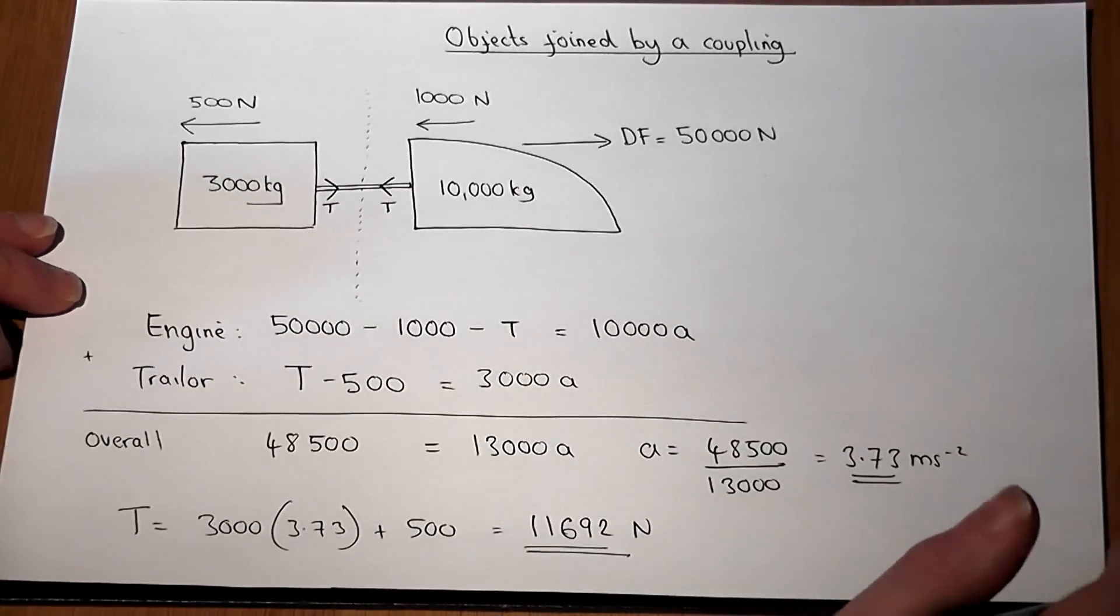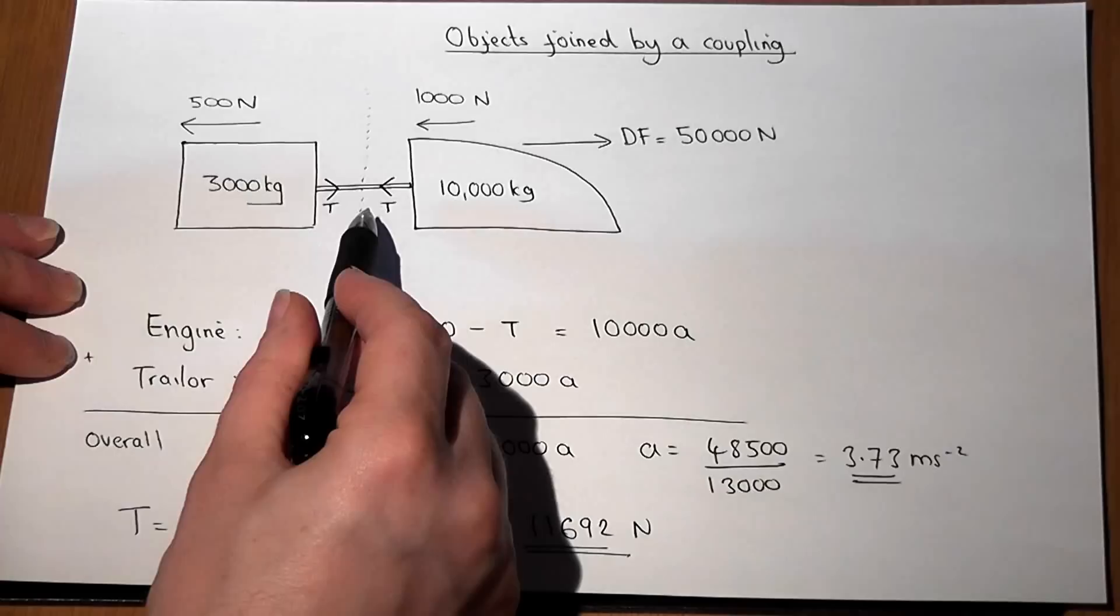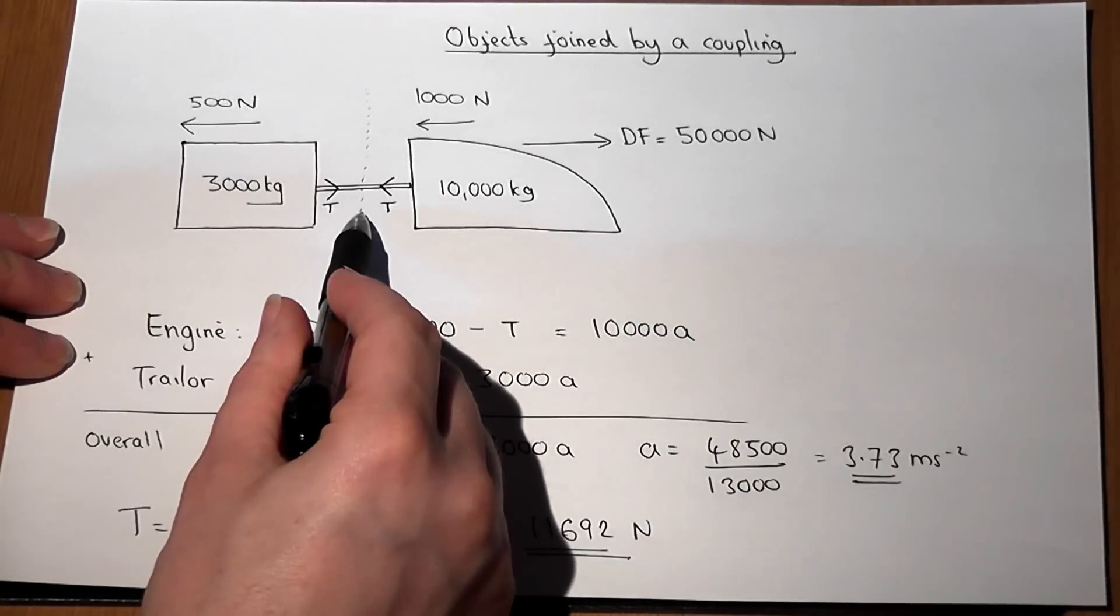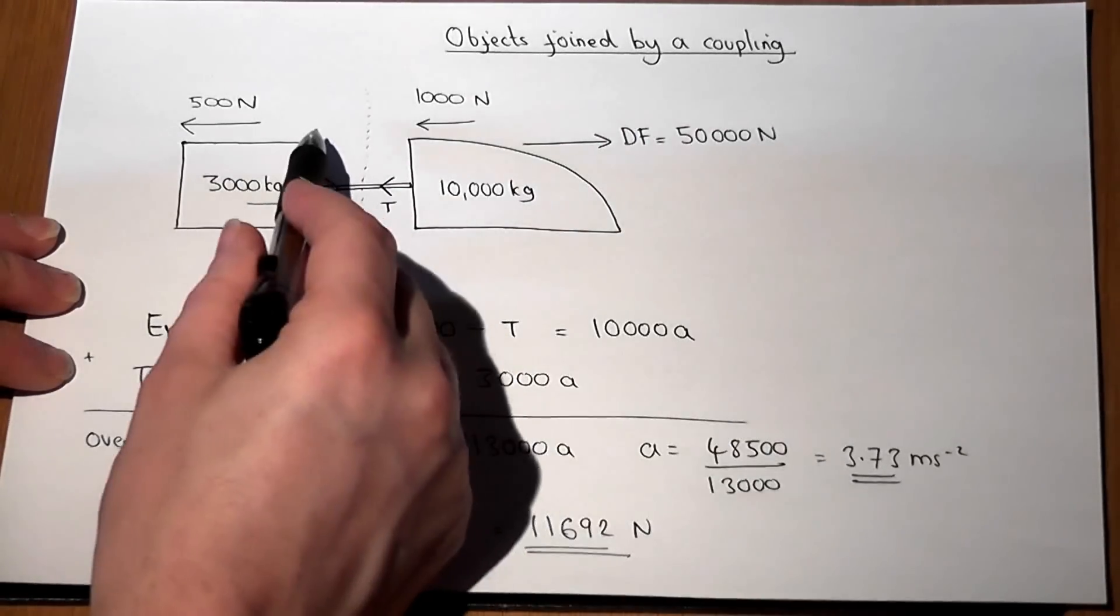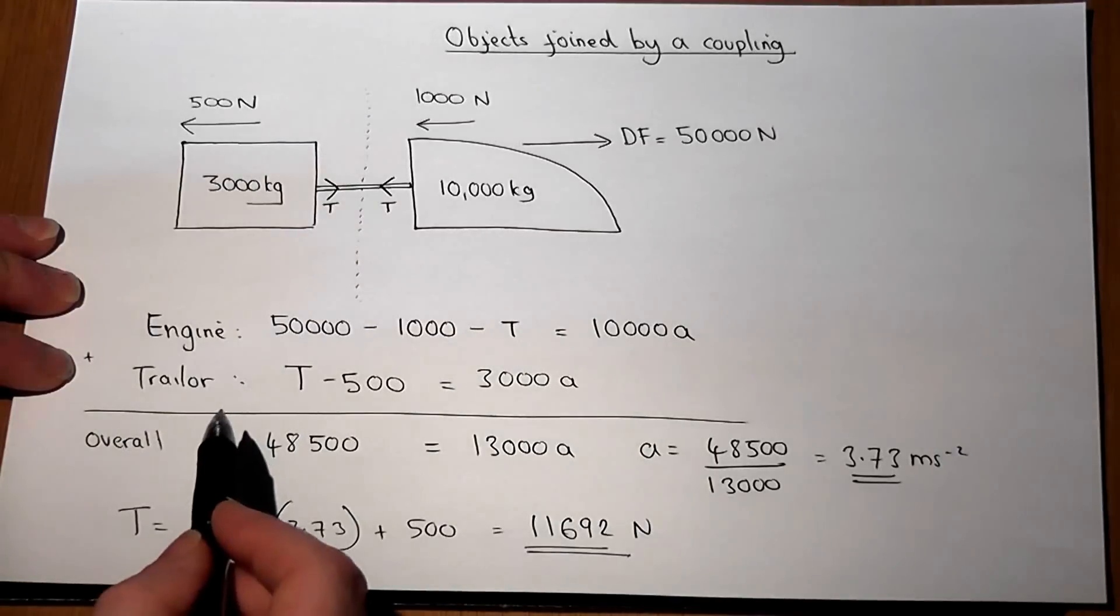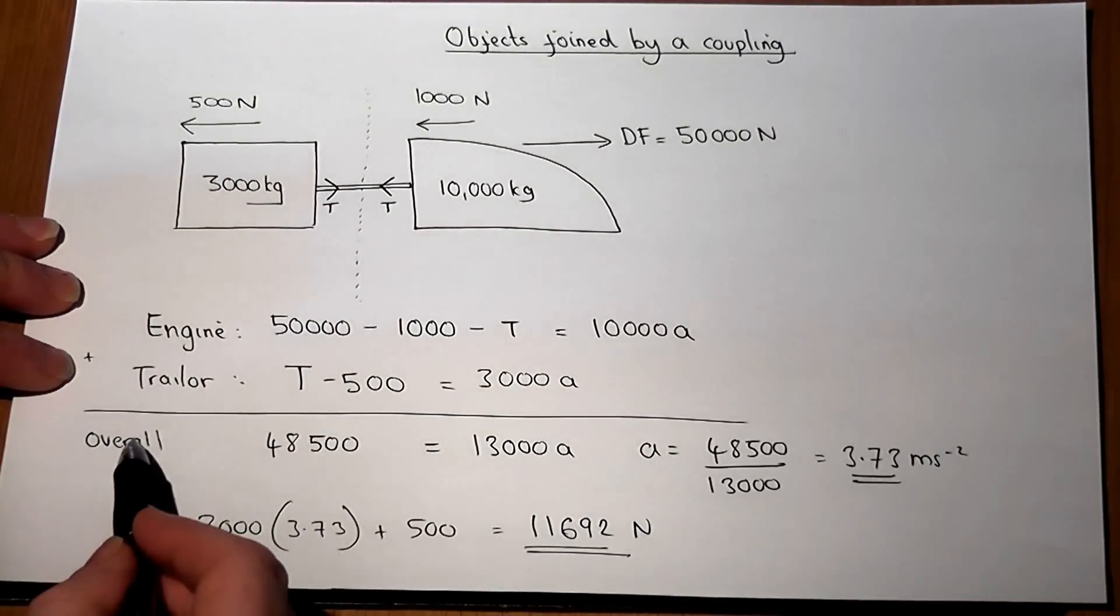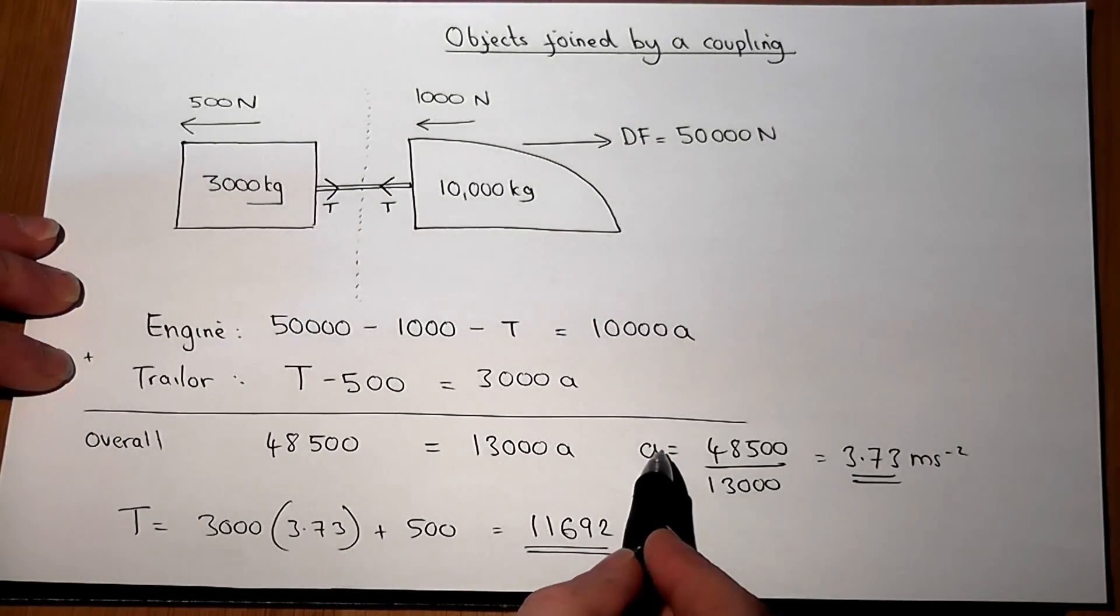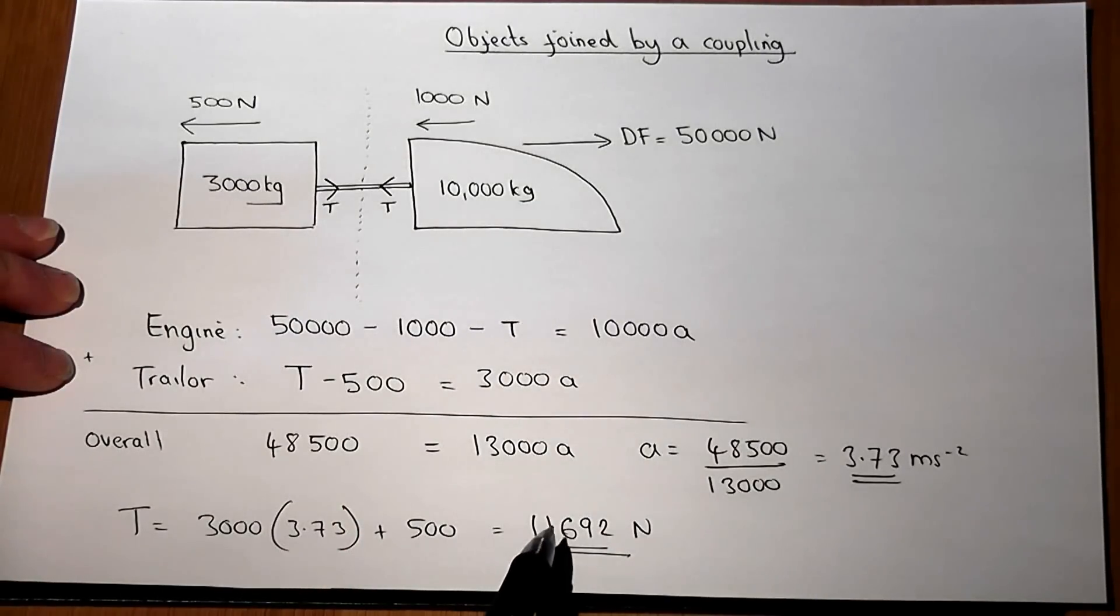So the trick to these questions is to consider the coupling and the tension within it, and to look at both objects separately. From which we get an overall equation of motion to find A, and then use one of the equations to find out what the tension is.